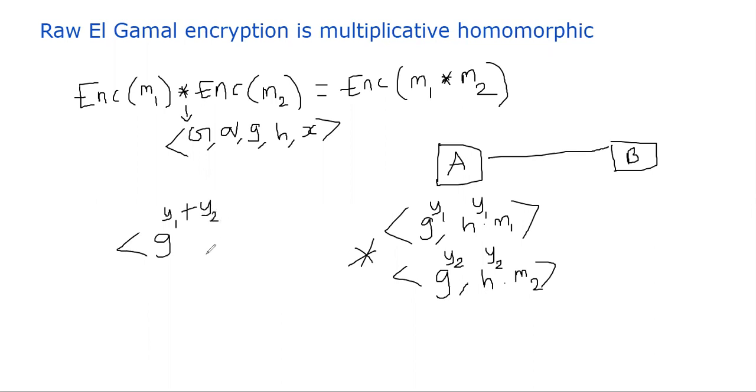And the second component you will be sending is H power Y1 plus Y2 times M1 M2. So this is what you will be sending to the recipient Bob.